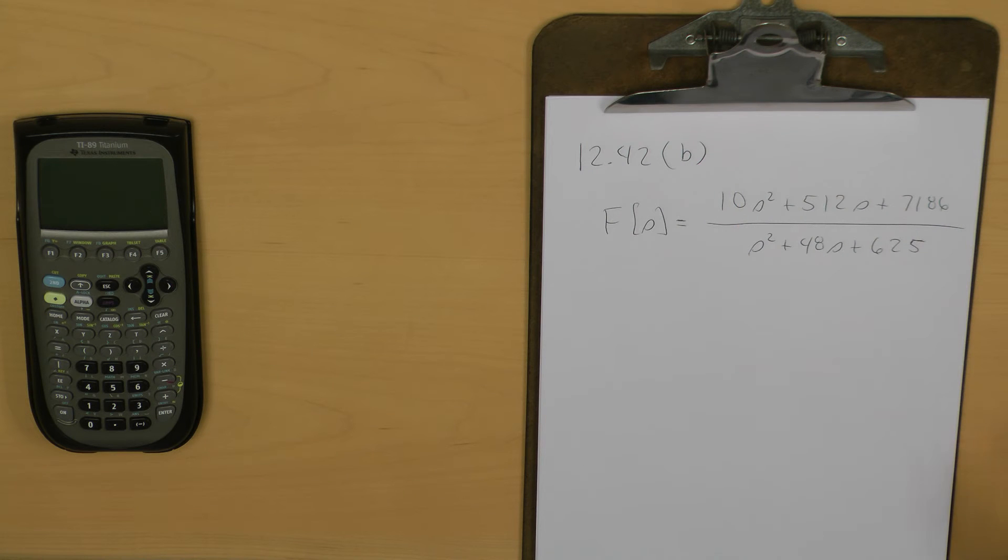Let's look at another problem. In this case, we are inverse Laplace transforming the expression capital F of S. It's not only improper as a transfer function, but if you can see, this denominator polynomial actually has complex roots.